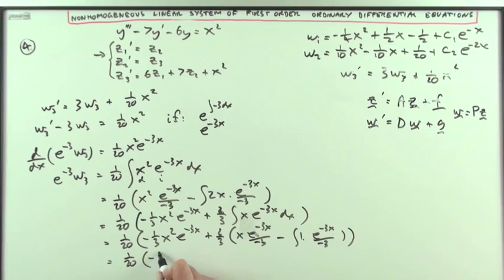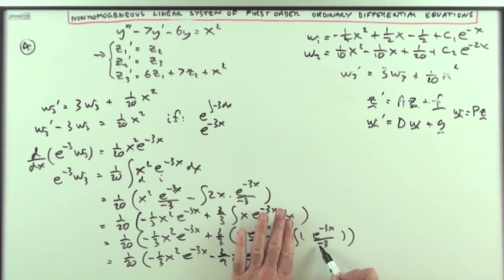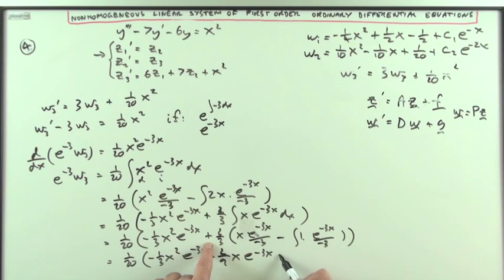So that's one twentieth of negative a third x squared e to the negative 3x. That's terms fine so minus two-ninths xe to the negative 3x. Don't have to be careful with this little bit here. This part here is going to be forget that negative. This part's gonna be e to the negative 3 divided by 9 so that's minus the ninth times 2 thirds, so minus 1 ninth times that is minus 2 over 27, e to the negative 3x, I'll put plus c3.